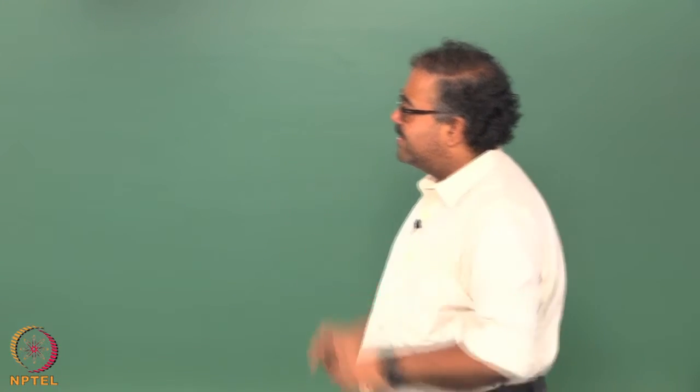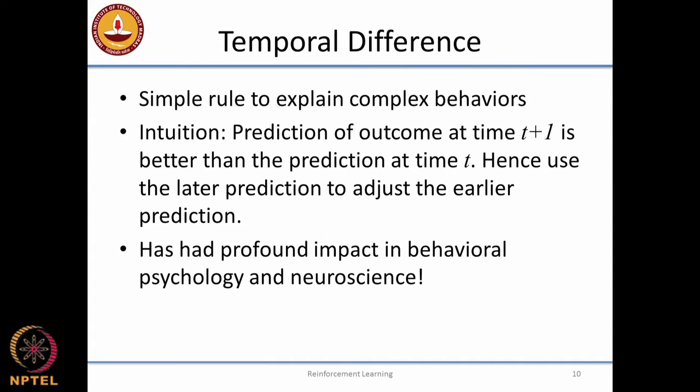This next slide is the soul of reinforcement learning — it's called temporal difference learning. Recall Pavlov's dog: the dog was predicting the outcome of the bell. When the bell rings, food is coming — it predicts the outcome and reacts appropriately. Most of reinforcement learning involves predicting some future outcome.